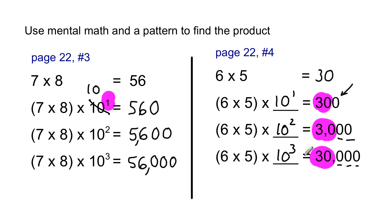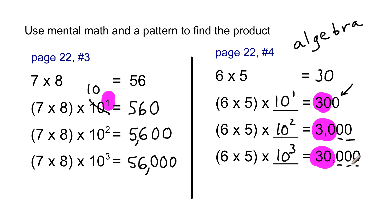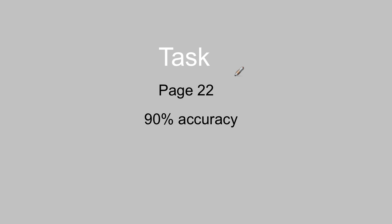On these you kind of have to work backwards. This is more in the realm of algebra, but it's something that fifth graders can handle if they have a method. Highlight either the basic fact or the zeros, but don't highlight both. Your task today is to work on page twenty-two. Good luck with ninety percent.